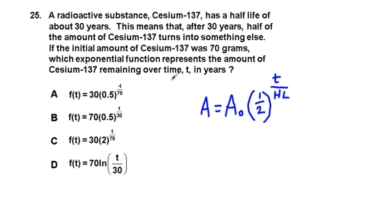What you're looking for is a starting amount of 70 grams, A sub zero. So we're looking for an equation that has A sub zero in the correct place, and that would be not answer choice A, or would it be answer choice C?